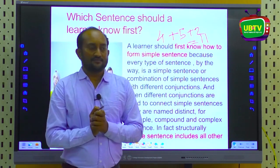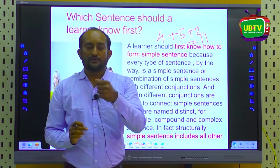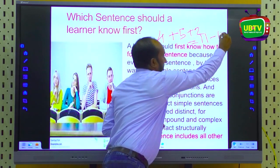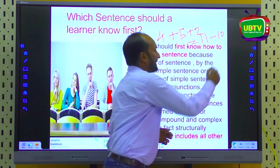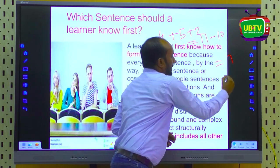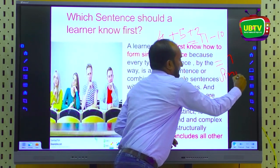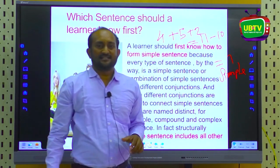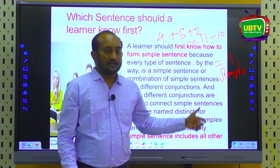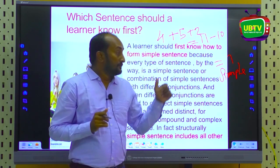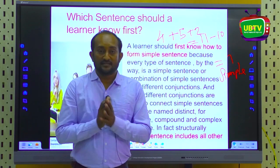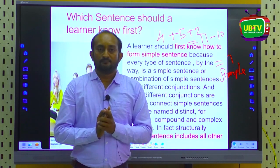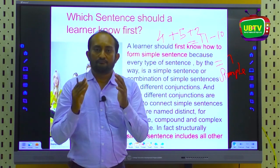But from these 11 categories, I would only pick up one — so 10 would be deducted, and there would be only one remaining. And this one is the simple sentence. If a learner only knows the simple sentence and how to frame it, then definitely he or she would be the master of expression and of English language.